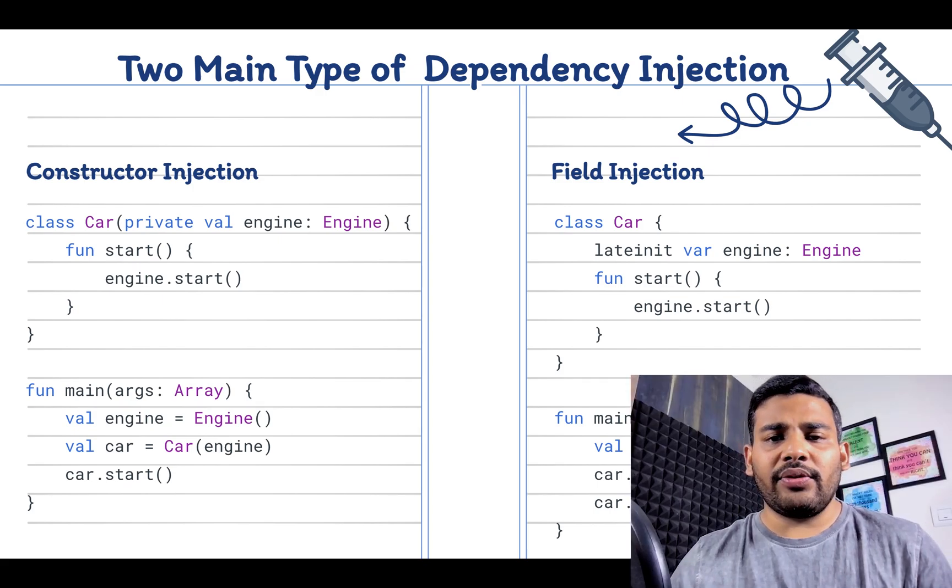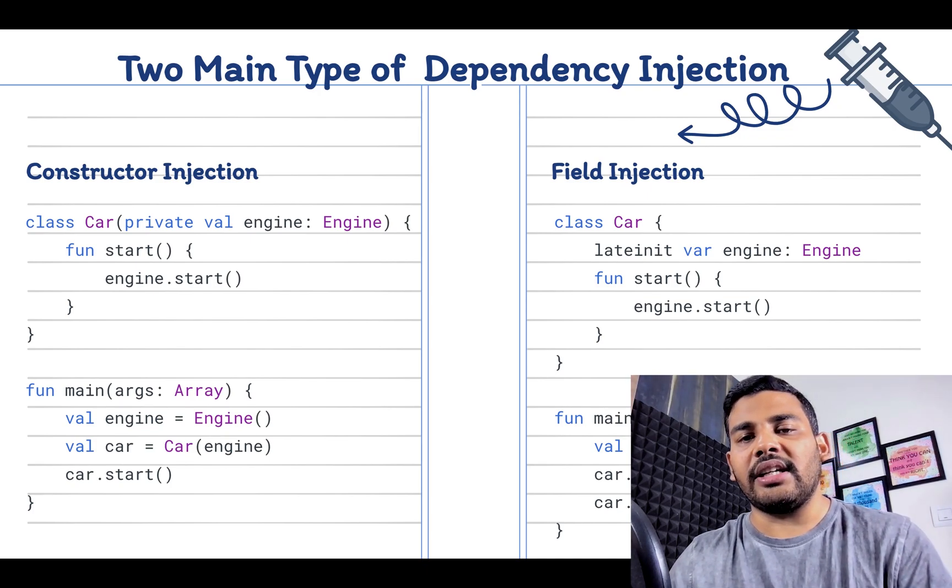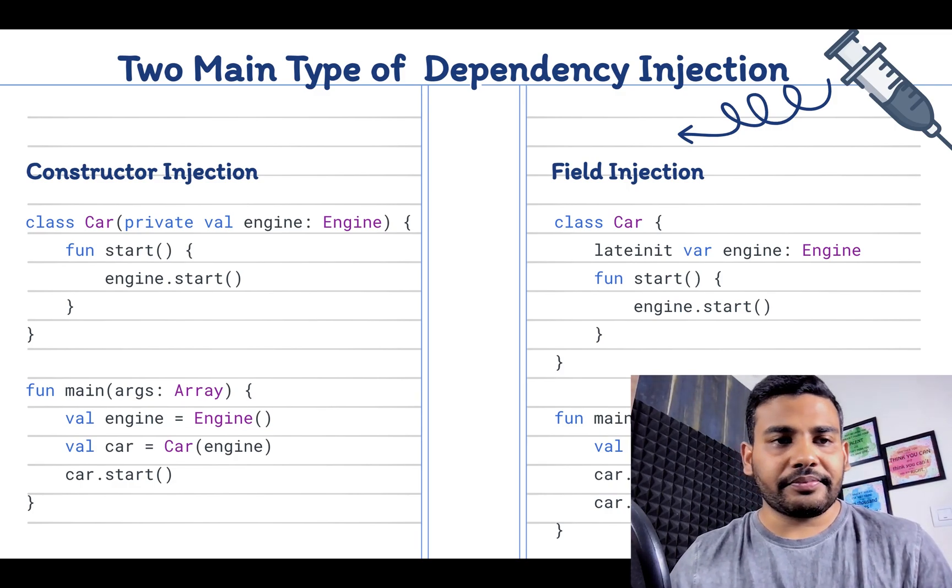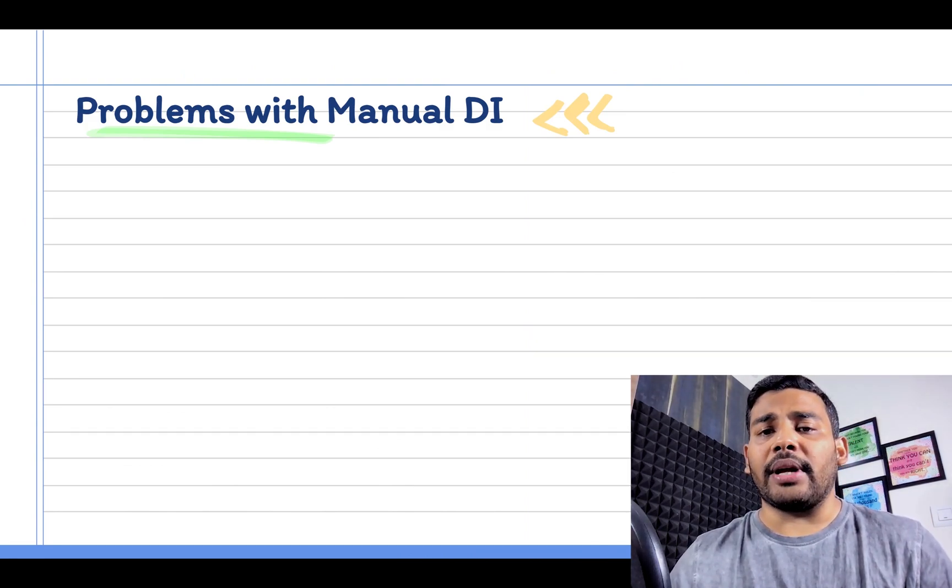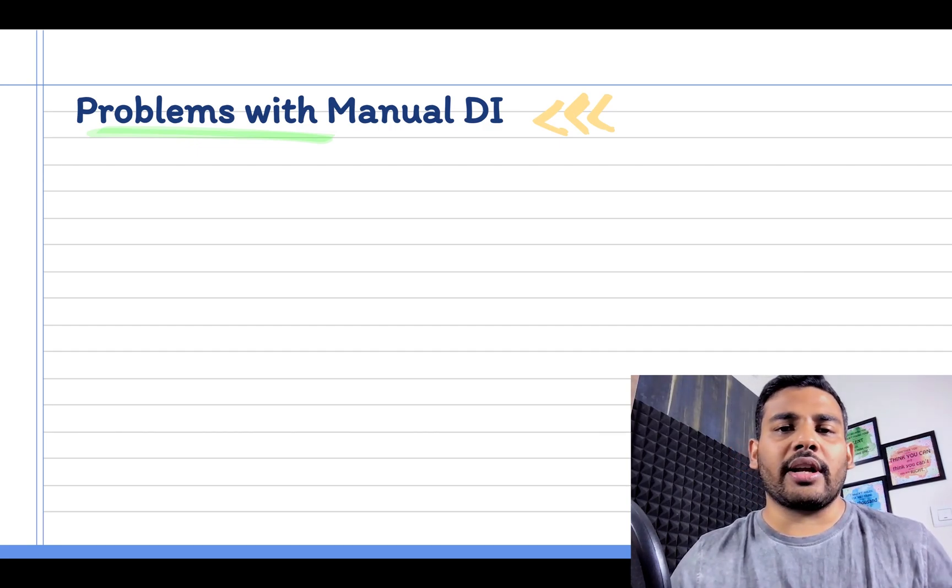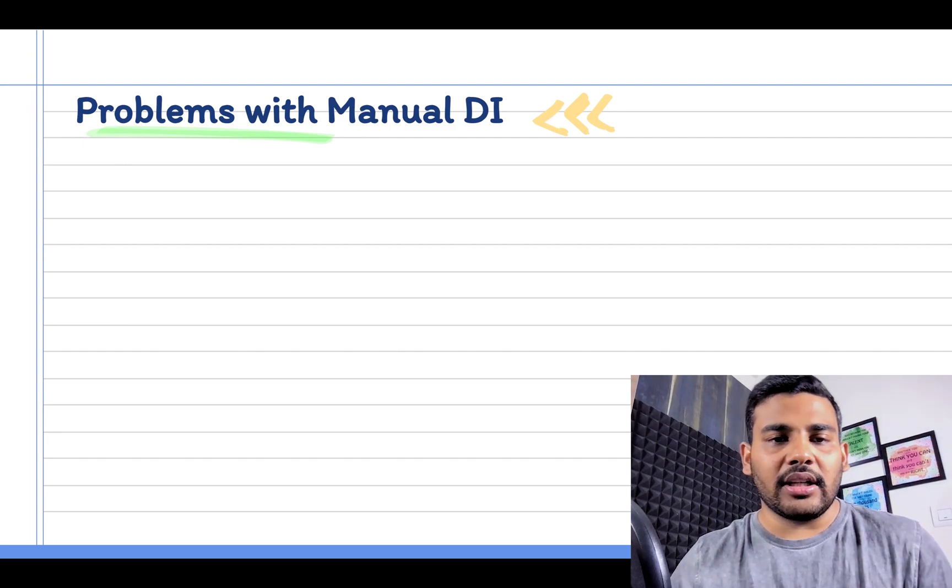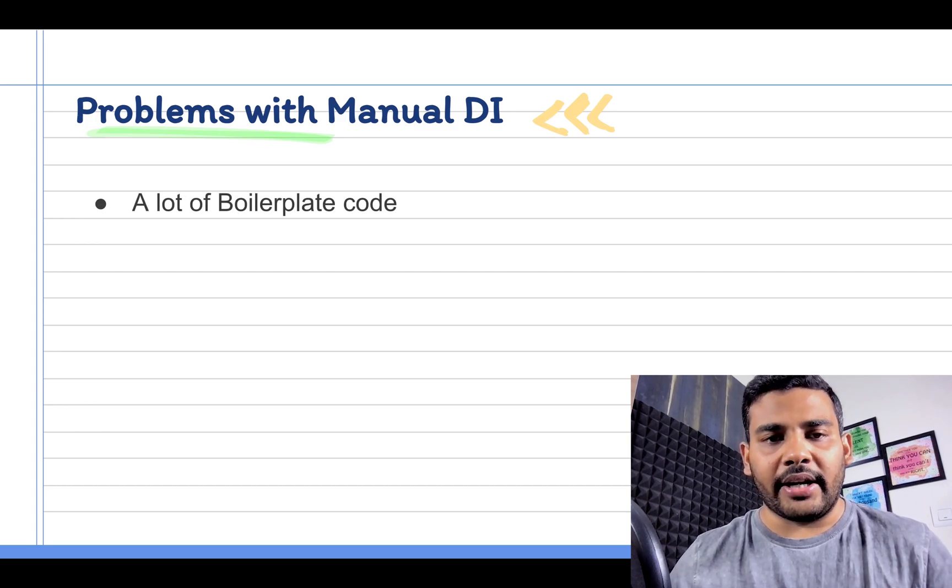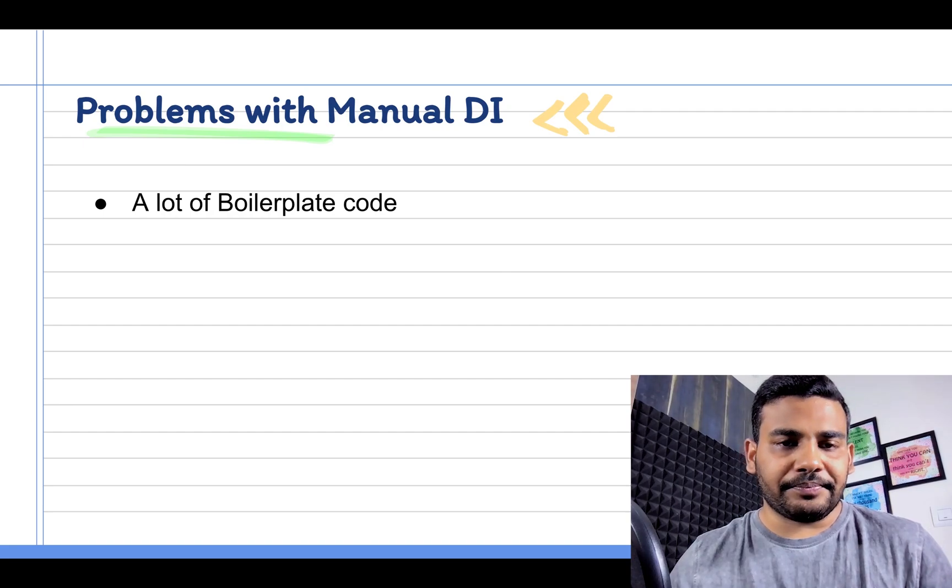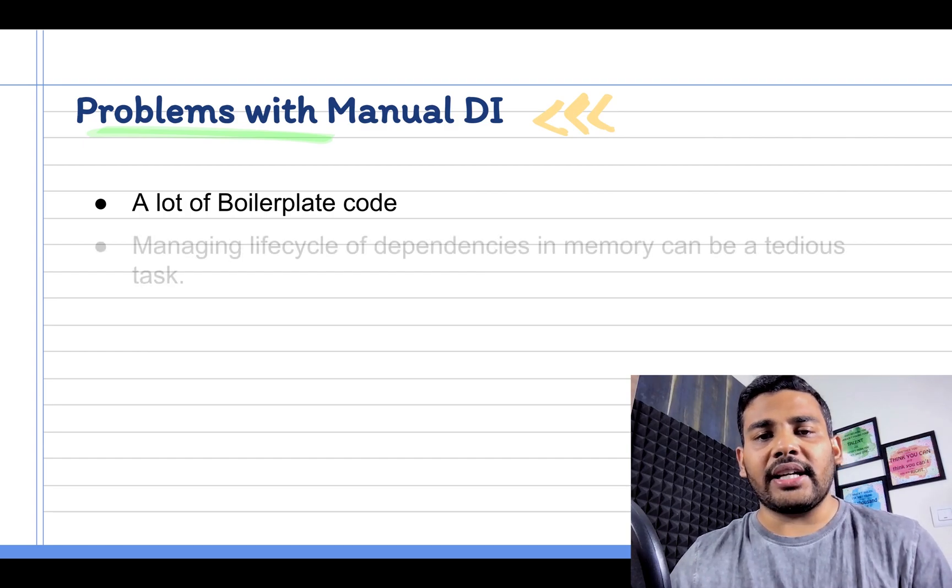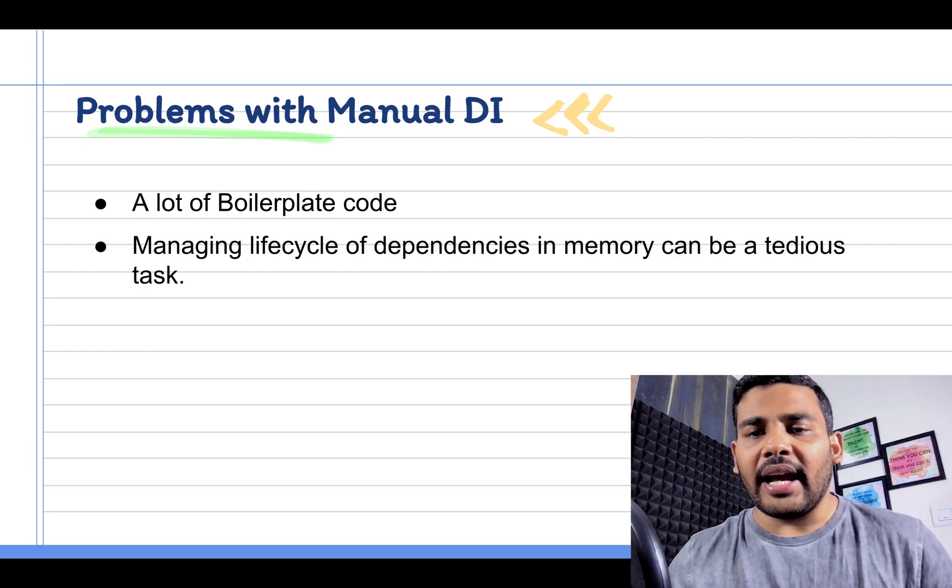In both examples we are constructing the Engine manually, and hence it is called manual dependency injection. It is an okay solution but it also has some issues. Right now we just seen a simple example, but think about bigger projects. For example, Engine may also require a lot of other dependencies. So handling all dependencies manually may end up to a lot of boilerplate code that will be hard to maintain, and if you are creating dependencies manually then you also need to manage the lifecycle of dependencies in memory. That can be a tedious task.